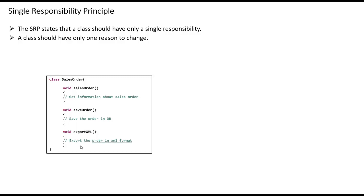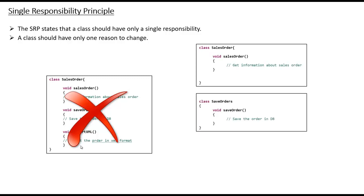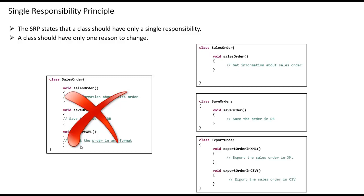To make the SalesOrder class follow the Single Responsibility Principle, I can segregate these three methods into three different classes: one class having the SalesOrder, another class SaveOrder that saves information to the database, and another ExportOrder class that has methods to export data into XML format and also CSV format. With classes segregated this way, changing the database type will not affect the SalesOrder or ExportOrder classes. Similarly, changing the export format will not affect the SaveOrder or SalesOrder classes.